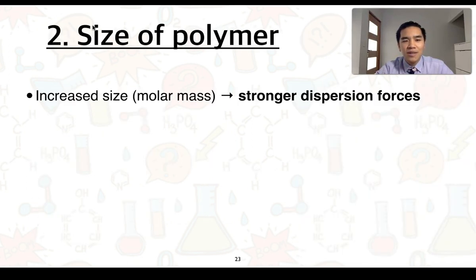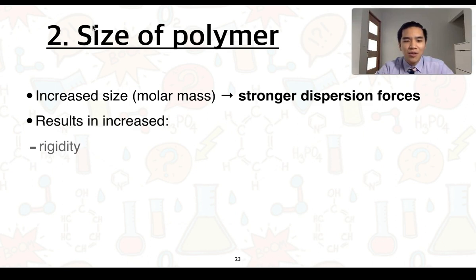The second consideration is the size of the polymer. An increased size or mass of the polymer is going to result in stronger dispersion forces, which then results in increased rigidity and strength, as well as melting point.